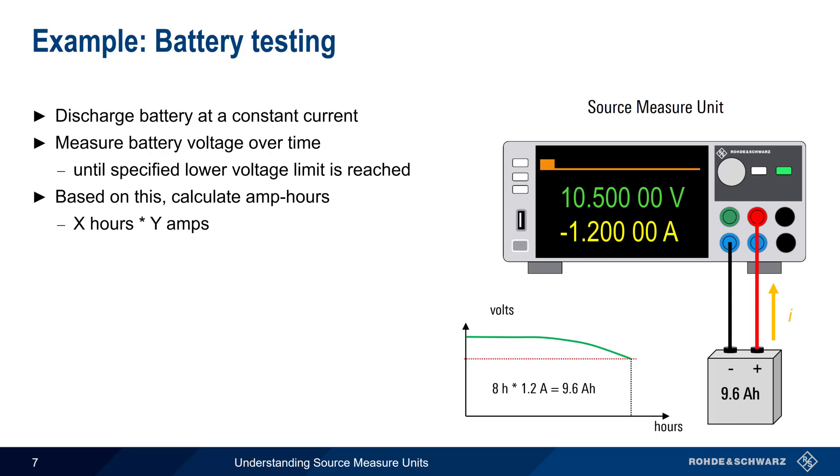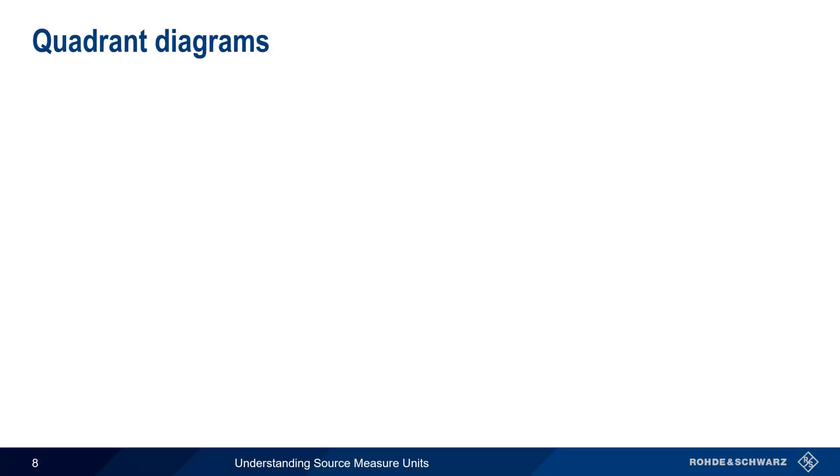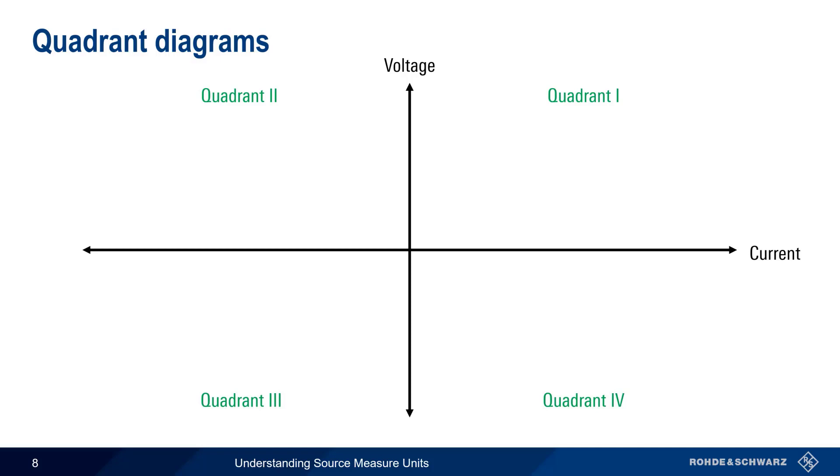Note that in this application, our source measure unit is sinking a negative current while measuring a positive voltage. In other words, our SMU is acting as an electronic load. Quadrant diagrams are often used to show the capabilities of a power supply or SMU, in particular with regards to their ability to supply positive or negative voltages and their ability to source or sink current.